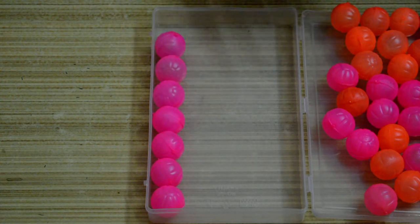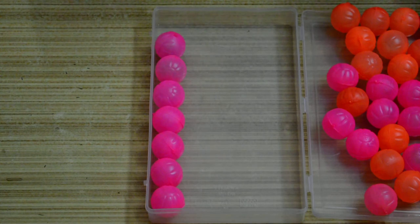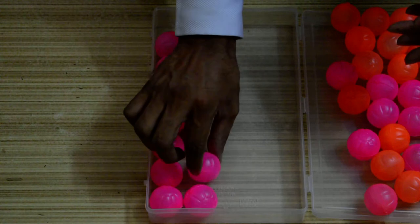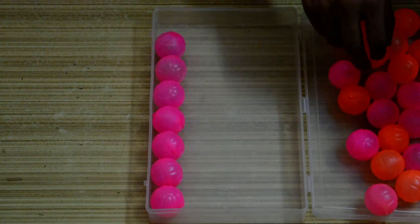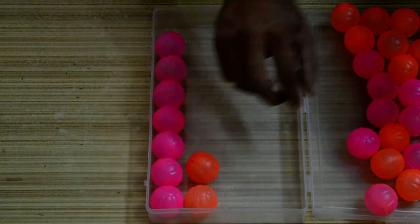Now the complexity starts arising when we go to a two-dimensional structure. What can happen in a two-dimensional structure is this. I start packing them like this.